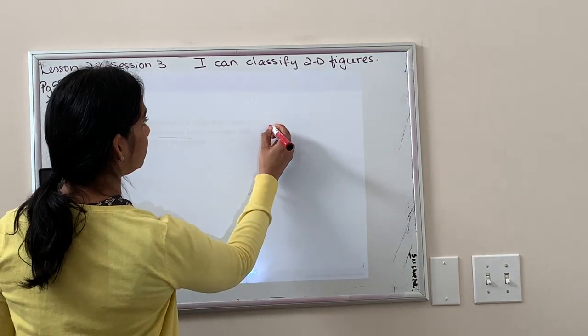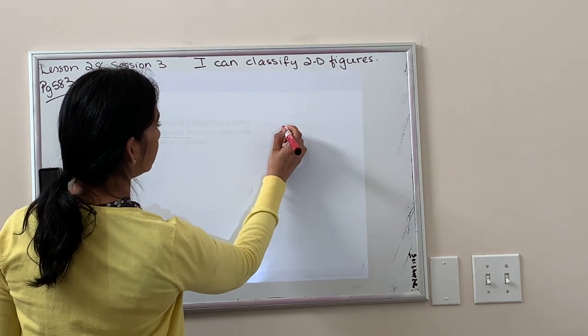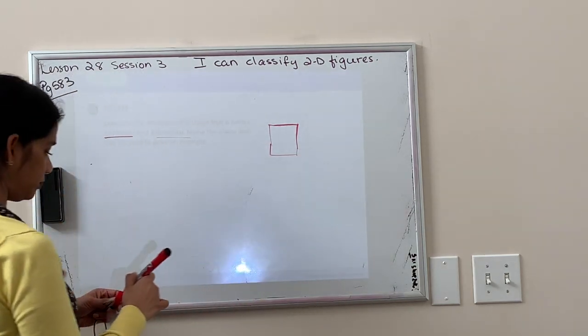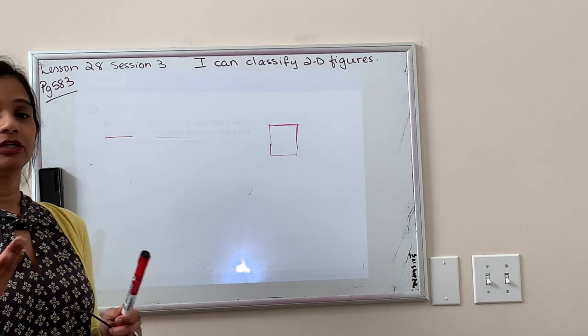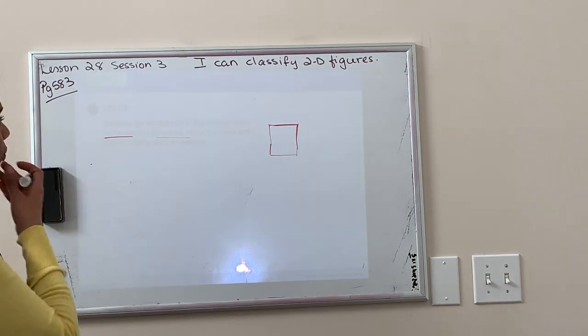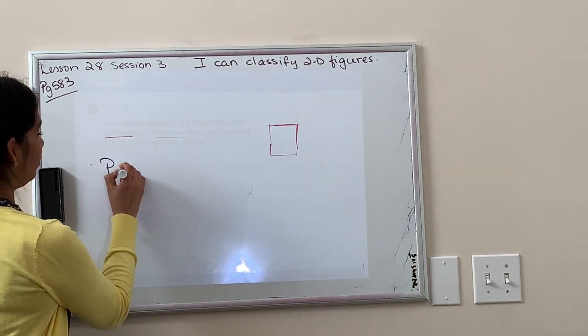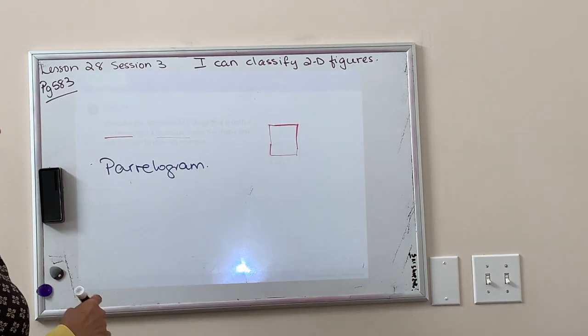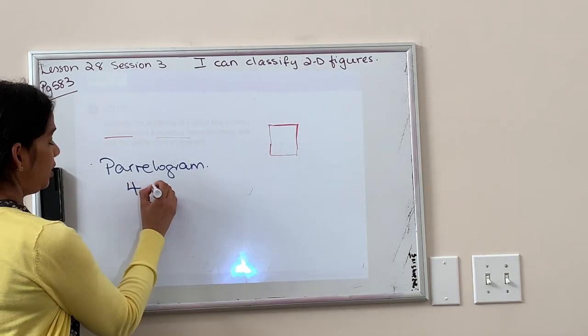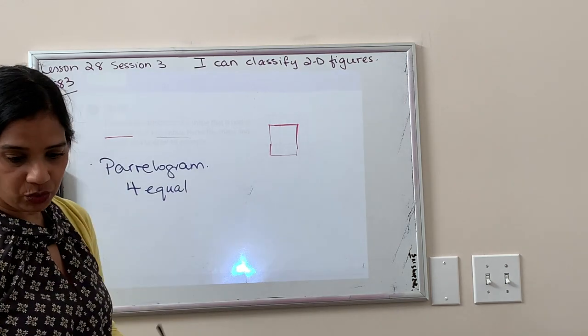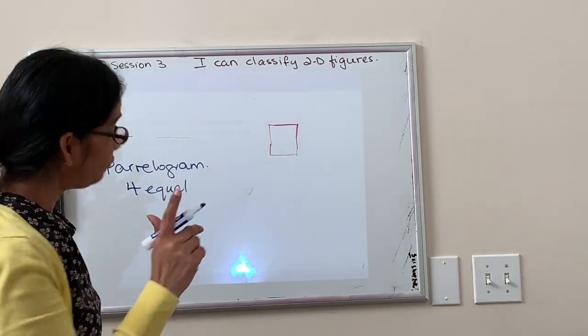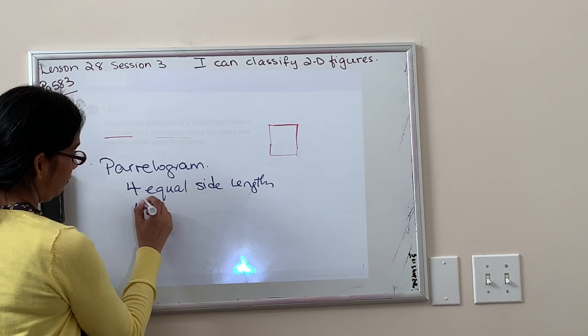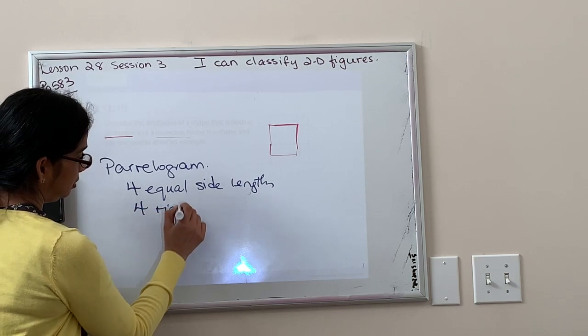Do we remember what a rhombus is? It's shaped like a diamond. And what shape? I know, a parallelogram. A parallelogram has all the features of a rectangle and a rhombus because we have four equal sides. And who can think of what else does it have? Four right angles. So four equal side lengths and four right angles.